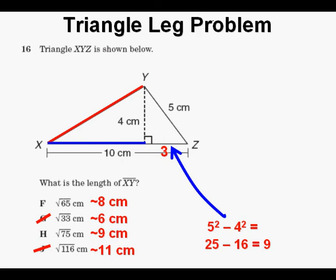And since this side is 3, that makes the blue segment 7 cm in length. So this red side, the hypotenuse, is going to be the square root of quantity 7 squared plus 4 squared. And that simplifies to the square root of 49 plus 16. So that's going to be the square root of 65.